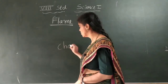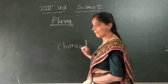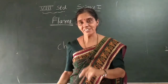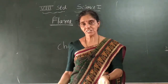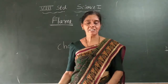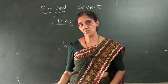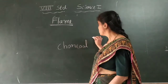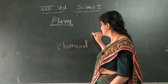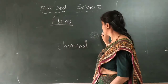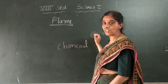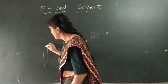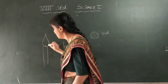Have you heard about charcoal? It is the black, porous, light material formed when wood is partially burned and the fire is extinguished before complete burning. When you ignite charcoal, it does not give a flame — instead it glows with a red color. Compare this with a candle, where you can clearly see a flame from the wick.